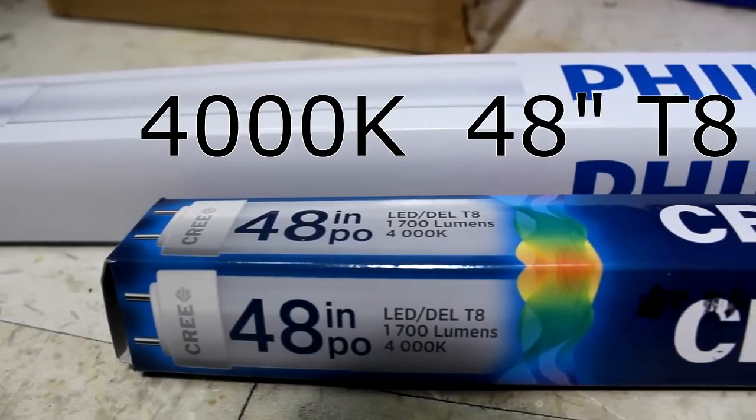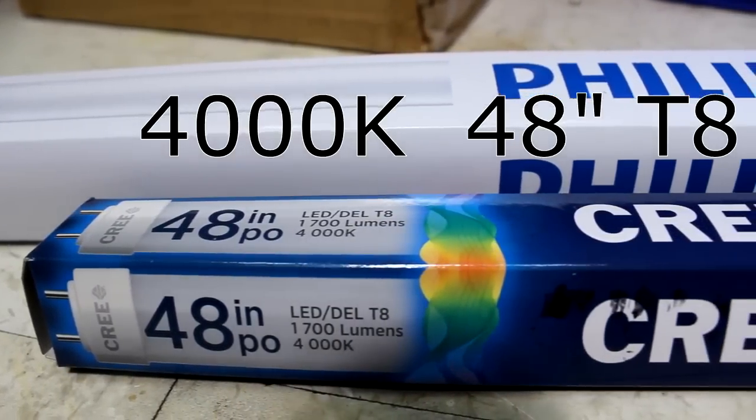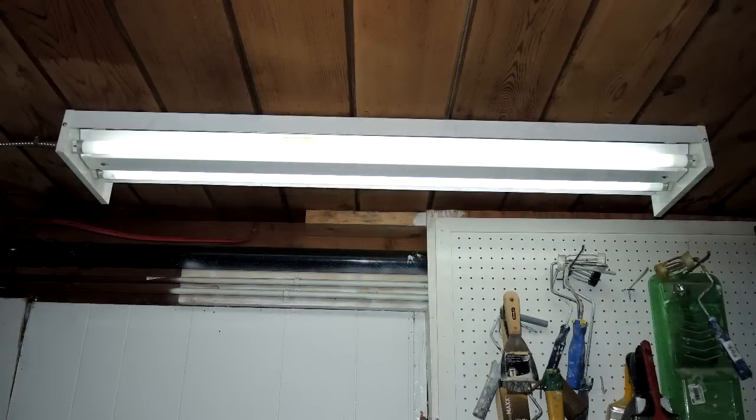Both are 4000 Kelvin. They're designed to replace the tubes in a fixture like this one here that's on the ceiling of my workshop. Meant to be drop-in replacements, no need to change out the ballast.